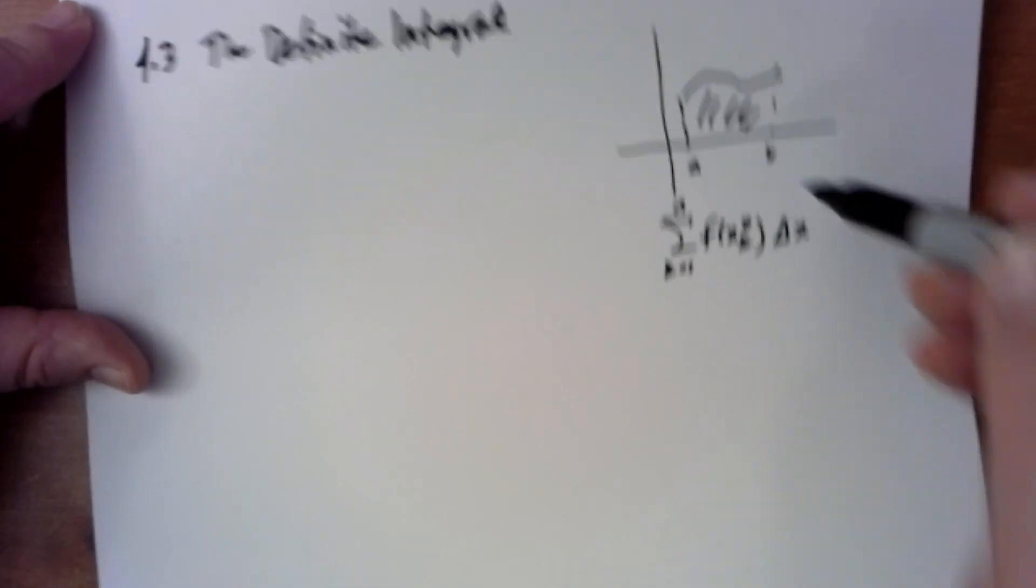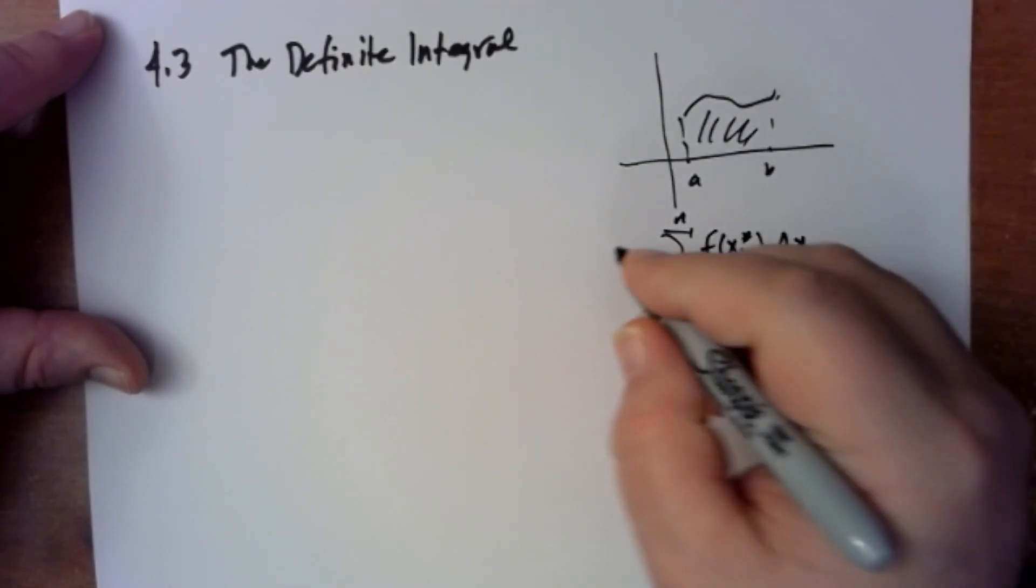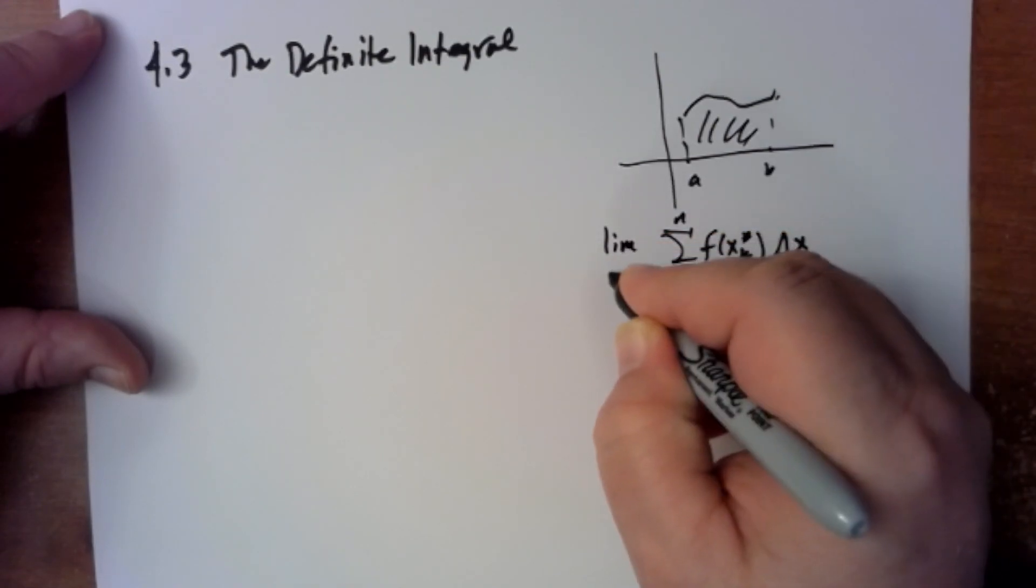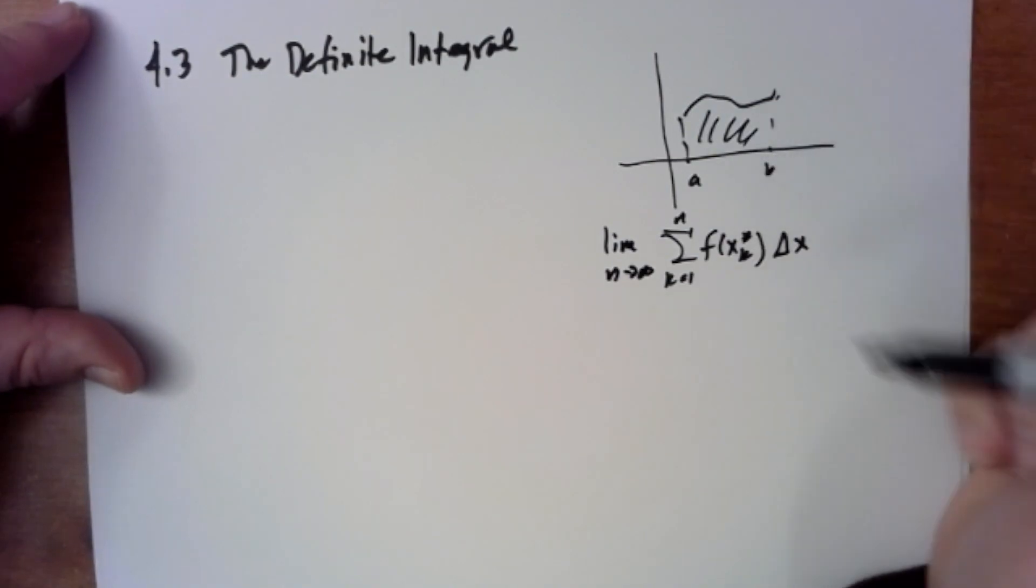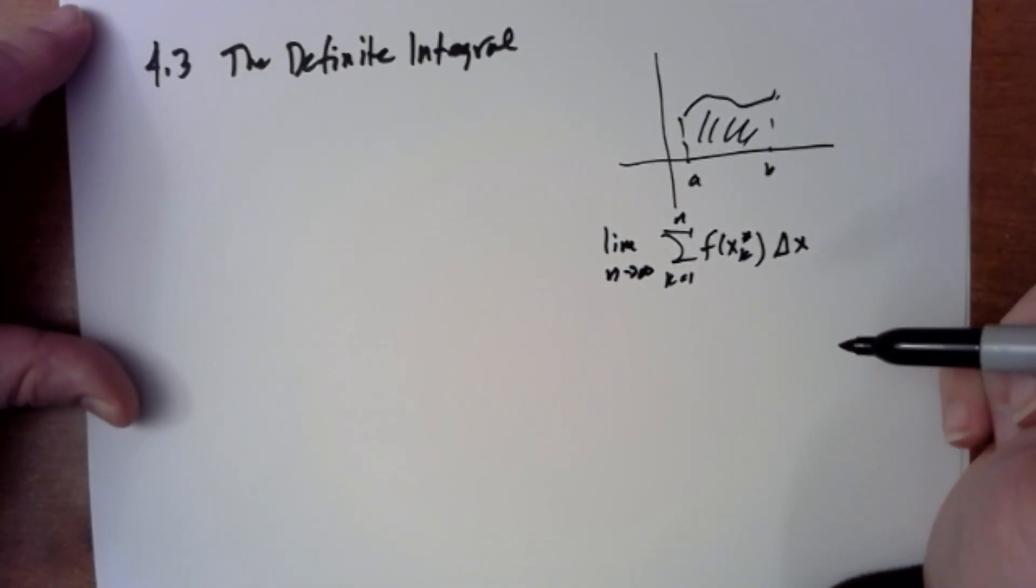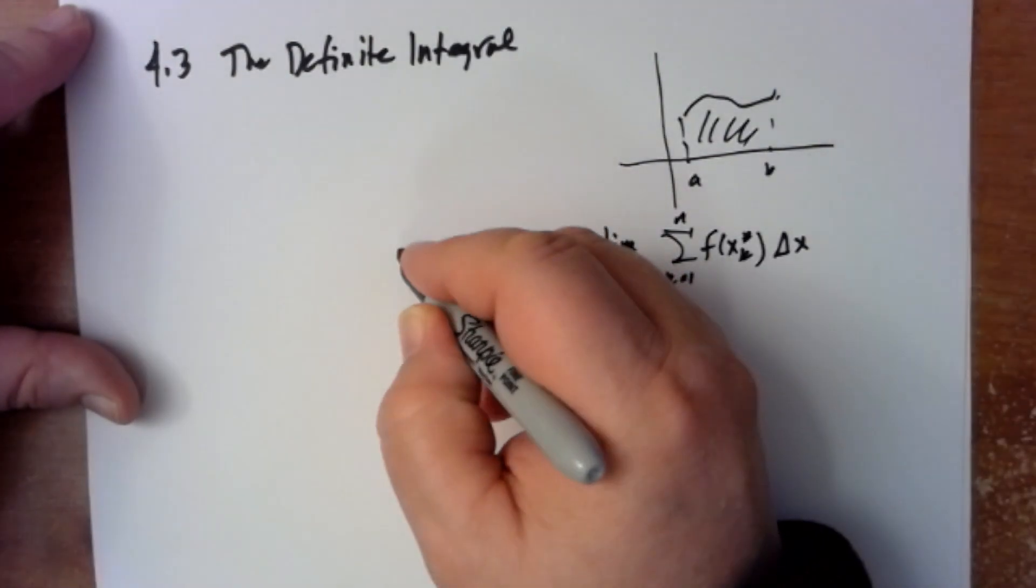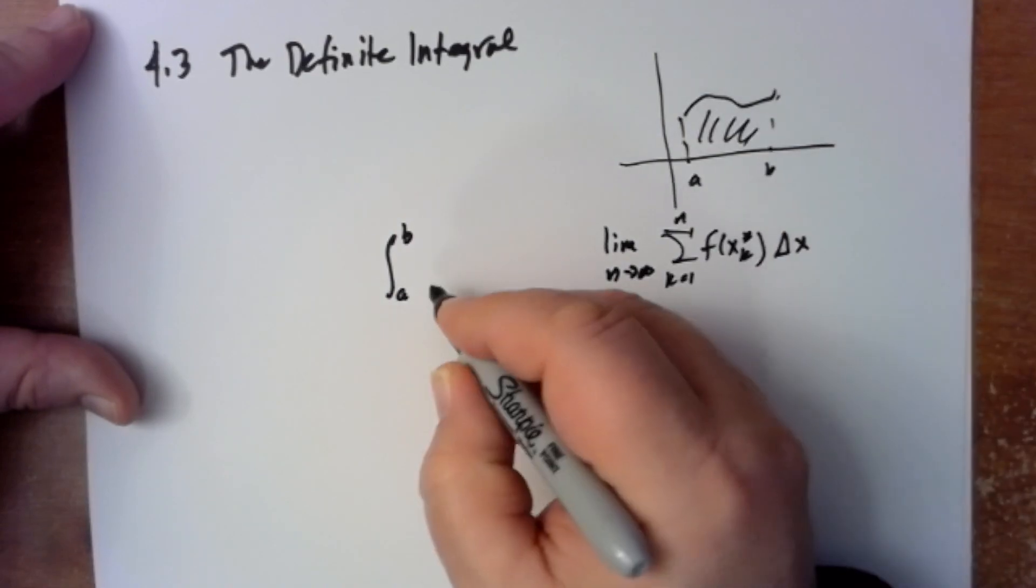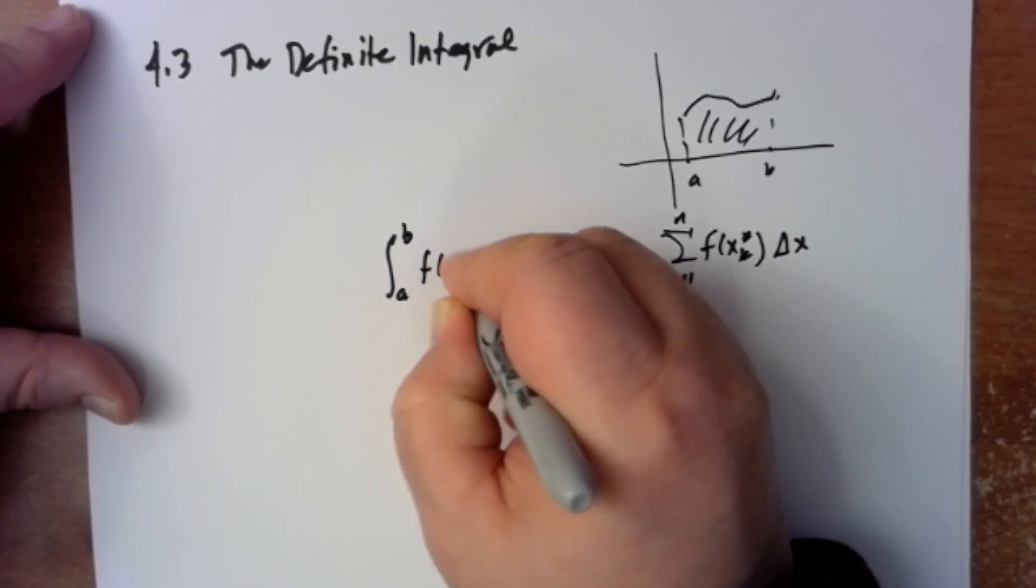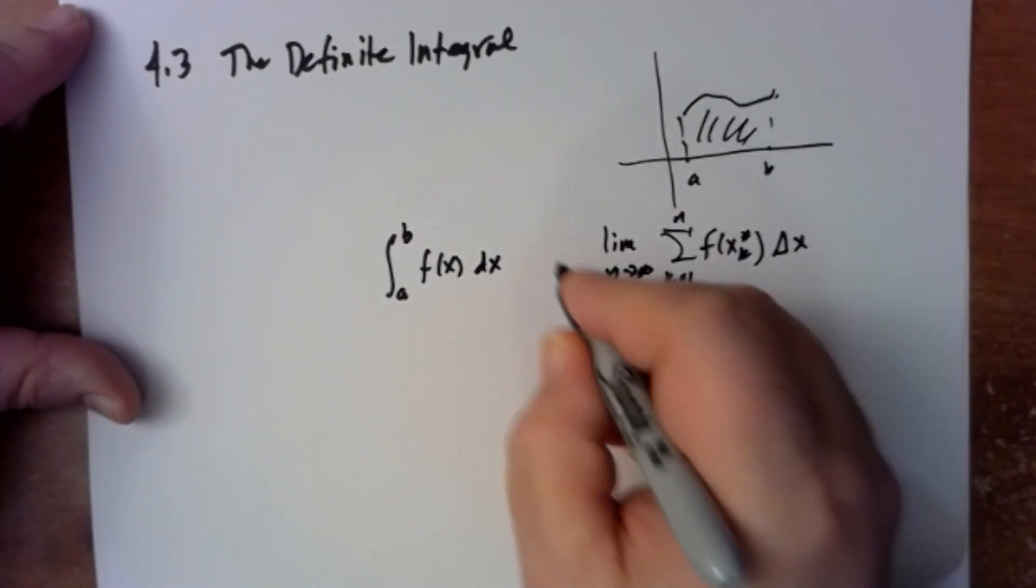This is the area under this curve using n rectangles. And then if you take the limit as n goes to infinity, that makes the area exact. So this quantity right here is also known as the definite integral from A to B of f(x), and then the delta x becomes a dx.